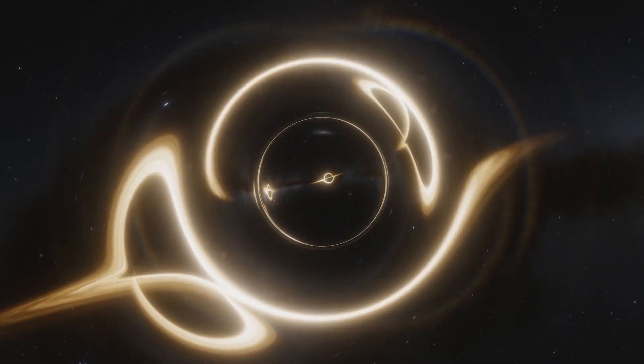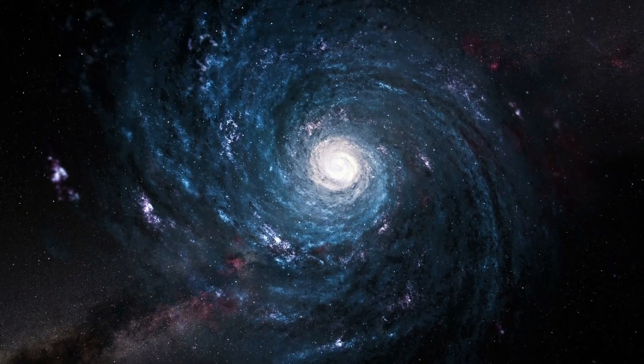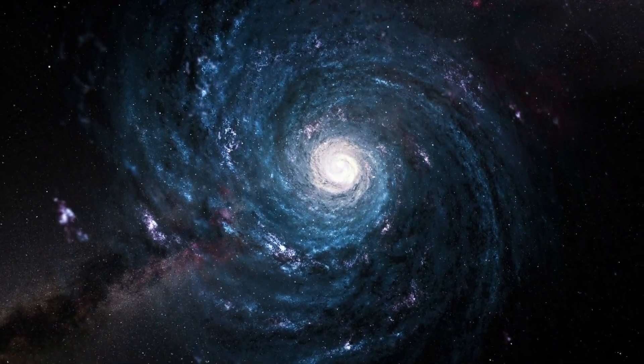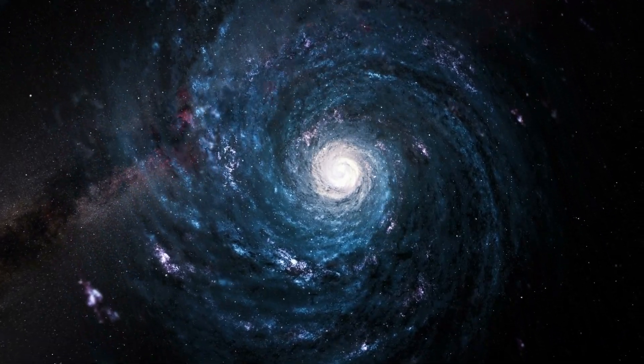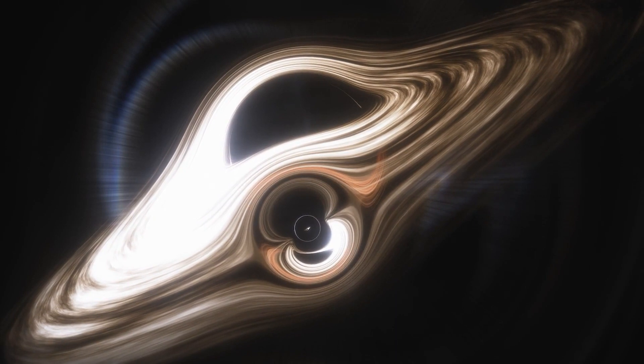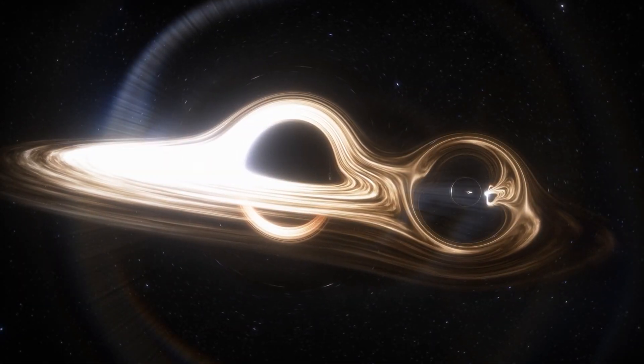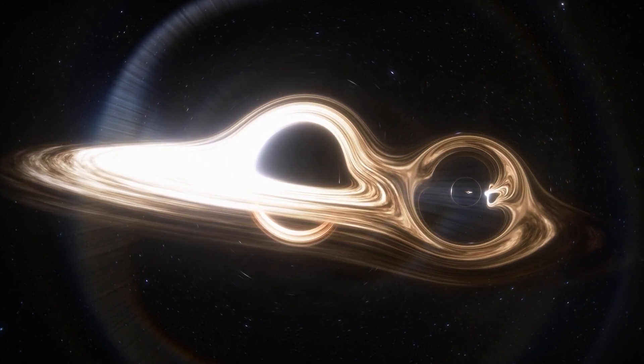One possible explanation is that the merger did not occur in empty space. A supermassive black hole at the center of a galaxy will often be surrounded by an enormous, flat rotating gas disk. Smaller black holes can fall into that disk, feeding off the matter in the disk to grow larger. Over time, those smaller black holes move closer together, forming binary systems that eventually merge.